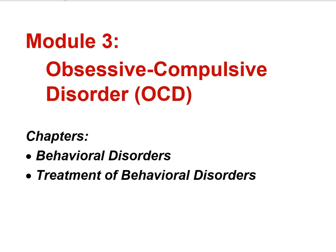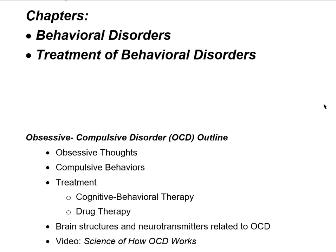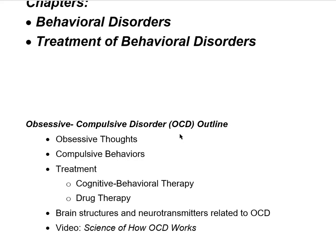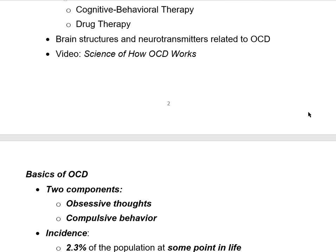This module is Module 3, Obsessive Compulsive Disorder, abbreviated OCD. It's relevant to both of the last chapters in Unit 5 — the chapter on behavioral disorders and the chapter on the treatment of behavioral disorders. Here's my outline: I'll talk about obsessive thoughts, compulsive behaviors, treatment for OCD including cognitive behavioral therapy and drug therapy, brain structures and neurotransmitters related to OCD, and you'll watch a seven-minute video called The Science of How OCD Works. You can expect one or two questions on the upcoming test from that video.